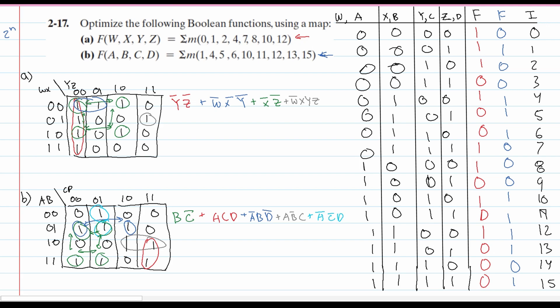And that is how you would optimize the following Boolean functions using a map, specifically a four-variable K-map. If you want more four-variable K-map or three-variable K-map problems, there are problems that go over this in the playlist linked below the like button.